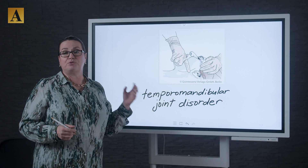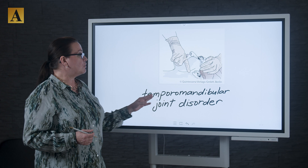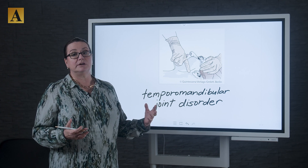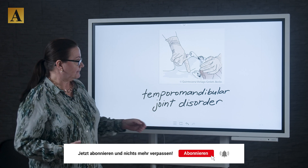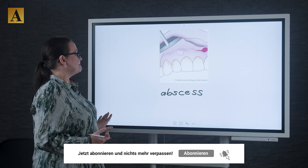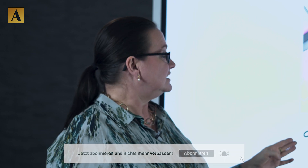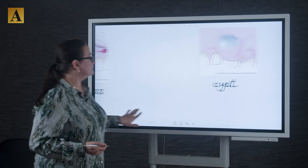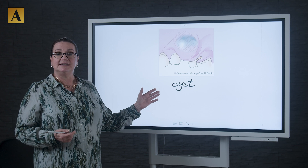If the patient has problems with his jaw joint, then you can say temporomandibular joint disorder, or a little more easily for the patient to understand, jaw joint disorder. Then we have the abscess — it's short and simple: the abscess. And last but not least, we're talking about a cyst.